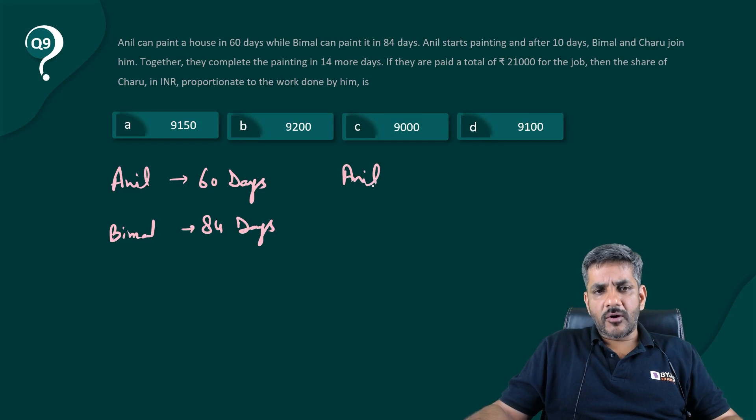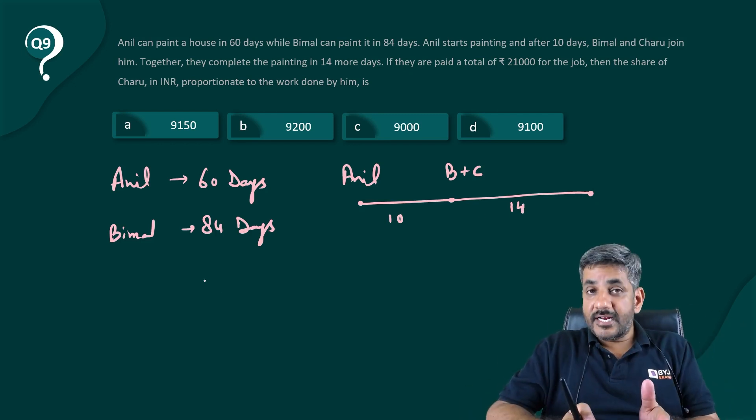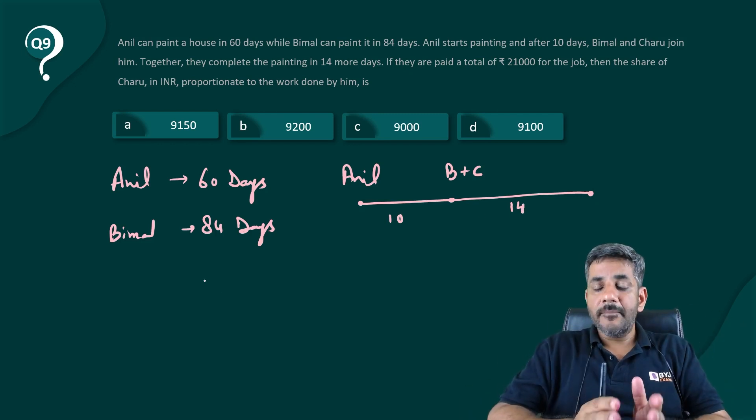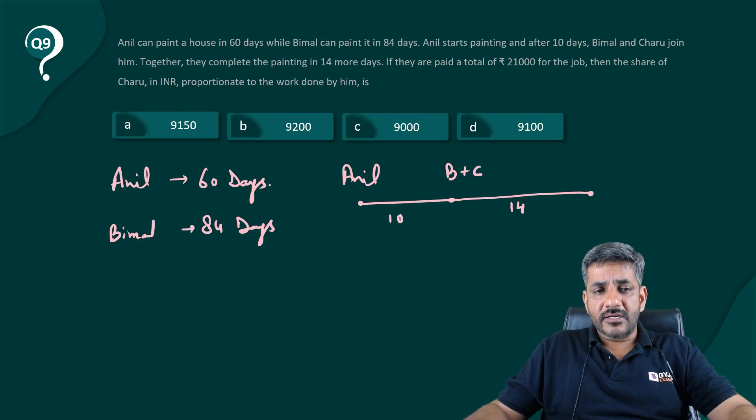What else is there? Anil starts painting and after 10 days Bimal and Charu join him. They complete the painting in 14 more days. So Anil works for the first 10 days, Bimal and Charu join him, and then they complete the work in another 14 days.